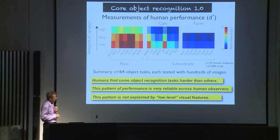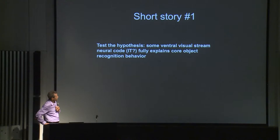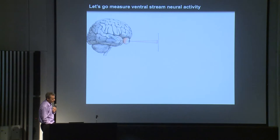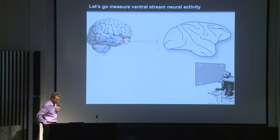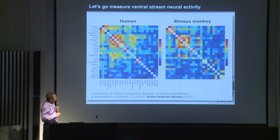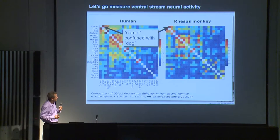Let me tell you three short stories. Story one: how well can ventral visual stream neural codes — for instance in IT — explain core object recognition behavior? We work on non-human primates because recently we've been measuring monkeys' abilities on discriminating among lots of basic objects. The confusion patterns among objects in monkeys and humans — for instance, confusing camels with dogs because they share similar geometry — we can't yet distinguish monkeys from humans in these abilities.